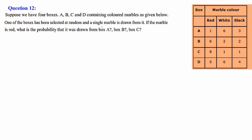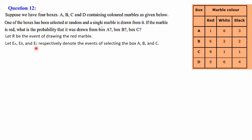This is clearly a reverse probability question, which means for solving reverse probability we must use Bayes theorem. But here we will go with a different approach. Let R be the event of drawing a red marble, and Ea, Eb, and Ec respectively denote the events of selecting box A, box B, and box C.